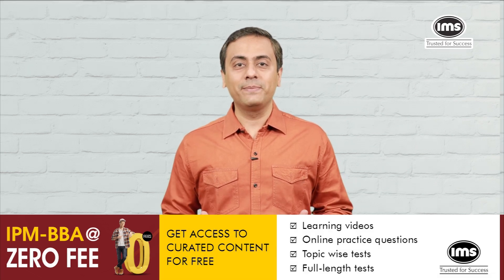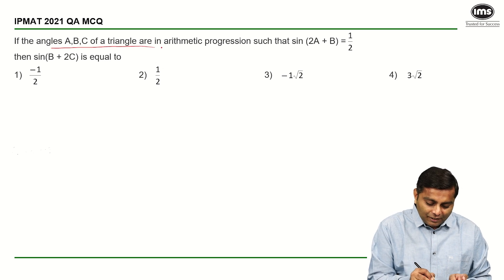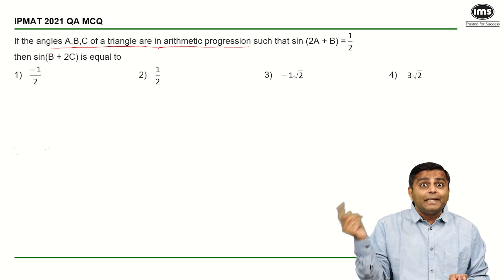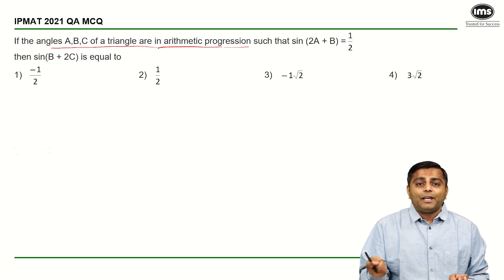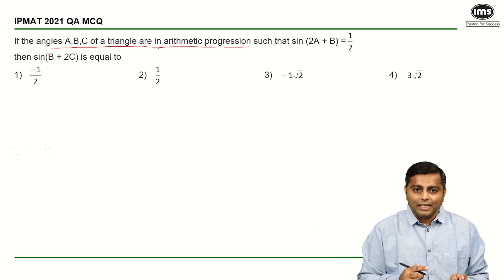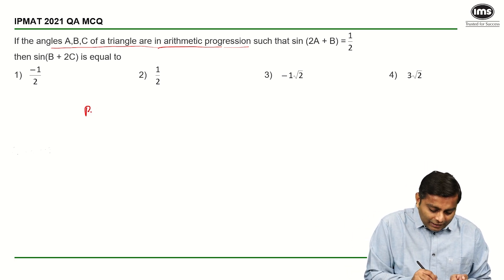Starting with the solution: ABC of a triangle are in arithmetic progression. So the three angles are in AP, so A plus B plus C is 180 (triangle property), and B minus D, B, and B plus D is going to be 180 because they are in AP. So 3B is 180, so first thing you need to understand is that B is equal to 60 degrees.